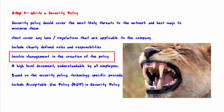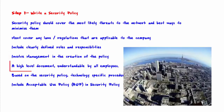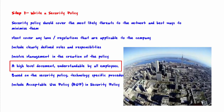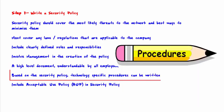You want to make sure that your security policy is a high-level document understandable by all employees. It should be broad as opposed to technology-specific. Writing the policy in this manner has the benefit that the security policy should rarely require updating. Based on the security policy, technology-specific procedures can be written, and those procedures will need to be rewritten over time — but the security policy should not.